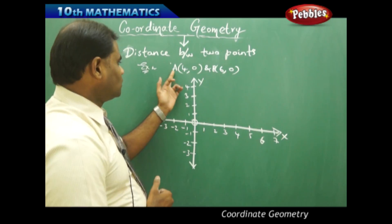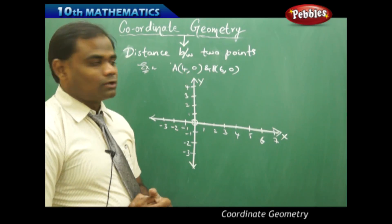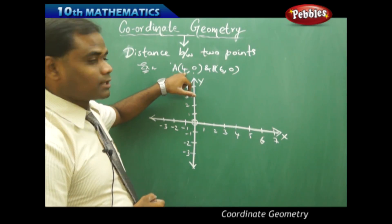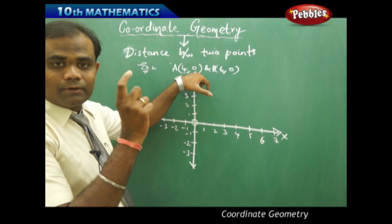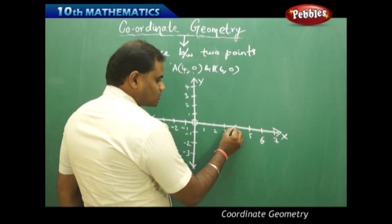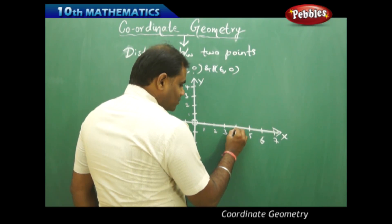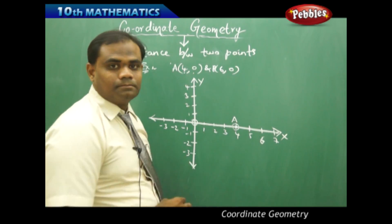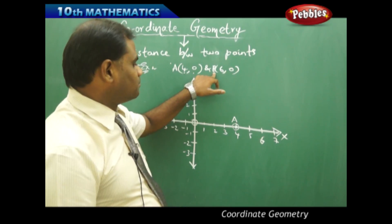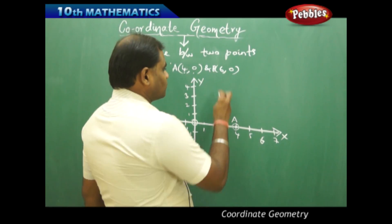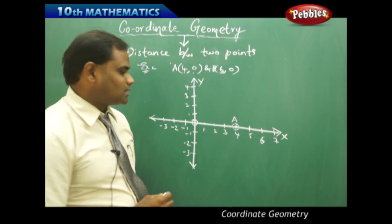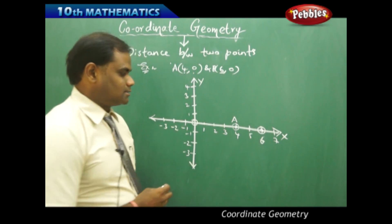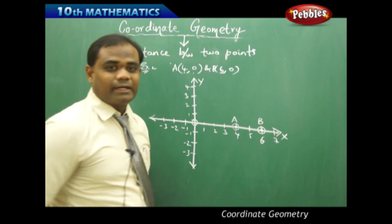Now, how do I plot the point (4, 0)? The point (4, 0) means the position of A is 4 units to the right of the x-axis and 0 units upward on the y-axis. Therefore, 4 units to the right and 0 units up is where A lies. Similarly, for point B, I move 6 units to the right and 0 units up, which places it exactly on the x-axis.